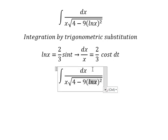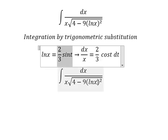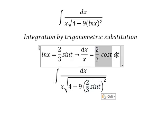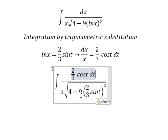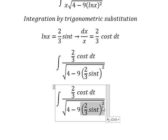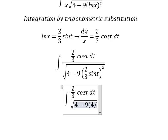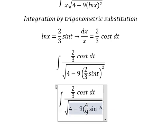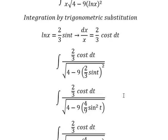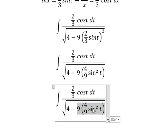So this one we change by this one. The x over x we change for this one. This one we have 4 over 9 sin t squared. So number 9 and number 9 we cancel.